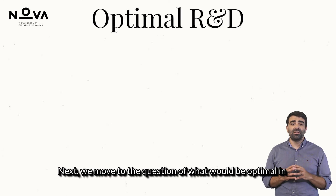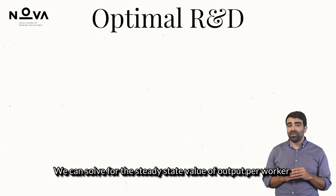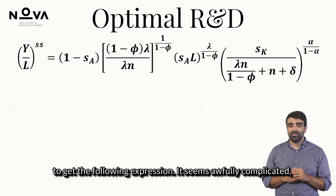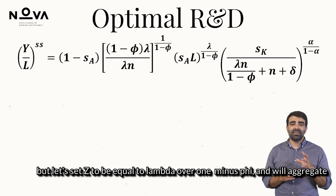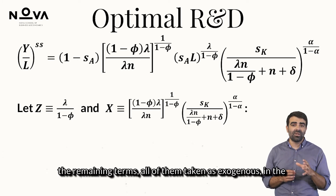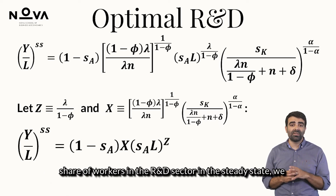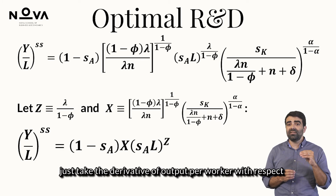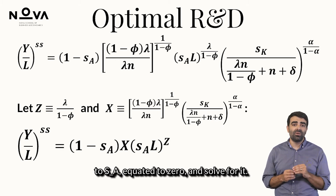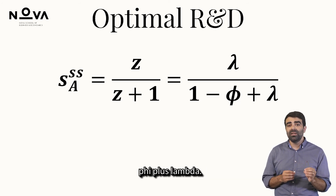Next, we move to the question of what would be optimal in terms of research and development. We can solve for the steady state value of output per worker. It seems awfully complicated, but let's set Z equal to lambda over 1 minus phi, and aggregate the remaining exogenous terms in the variable X. To find the optimal share of workers in the R&D sector in the steady state, we take the derivative of output per worker with respect to S_A, equate it to zero, and solve for it. We get that it is equal to lambda divided by 1 minus phi plus lambda.